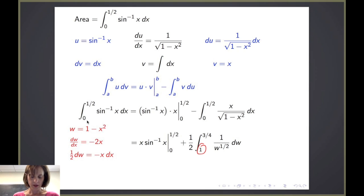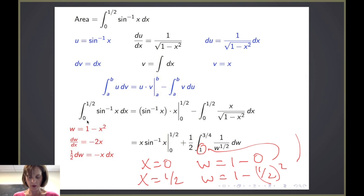Now, how did we change the bounds? Well, if x is equal to 0, w is equal to 1 minus 0, which is where we get the 1. If x is equal to 1 half, w is equal to 1 minus 1 half squared, which is how we get the 3 fourths.